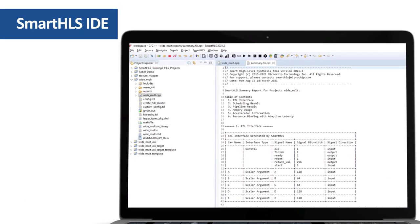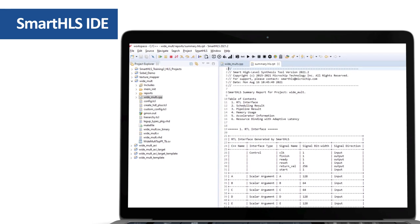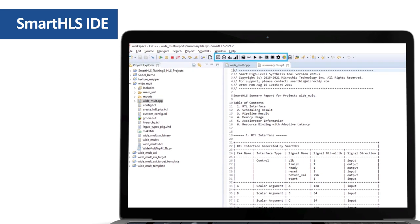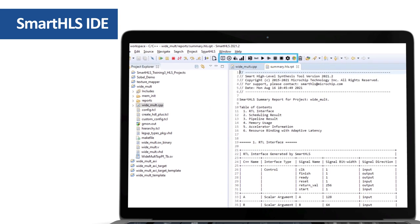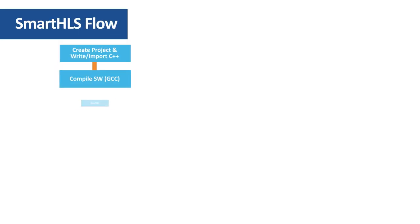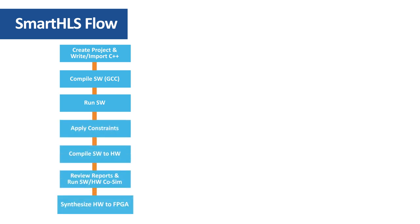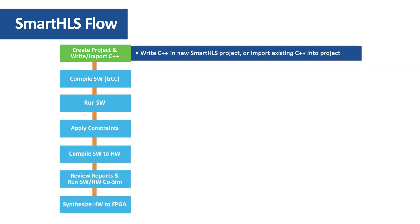Here is the view of Smart HLS when invoked. It uses the familiar Eclipse-based IDE. We'll focus on the design process steps, which are the icons at the top of the screen. Following these icons, here is the Smart HLS design flow. The first step is to invoke Smart HLS, which involves creating a project, followed by either developing or importing existing C++ code.